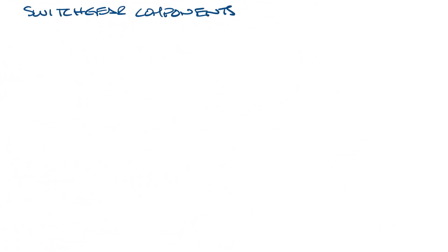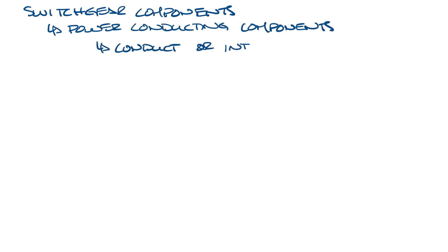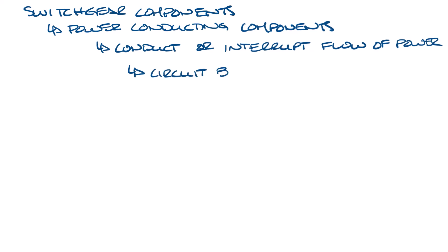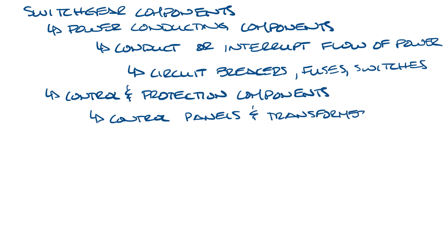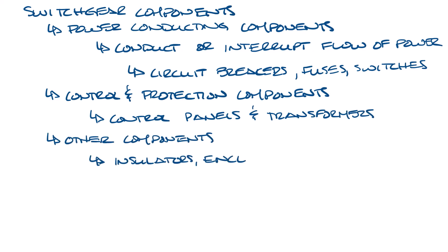It helps to distribute power at different voltage levels to meet the needs of various equipment. You can break switchgear components into two general categories. Power conducting components — these conduct or interrupt the flow of electrical power, such as circuit breakers, fuses, and switches. And then there are control and protection components, such as control panels and transformers. There are also other components such as insulators, enclosures, and cable terminations that are needed to make it all work.